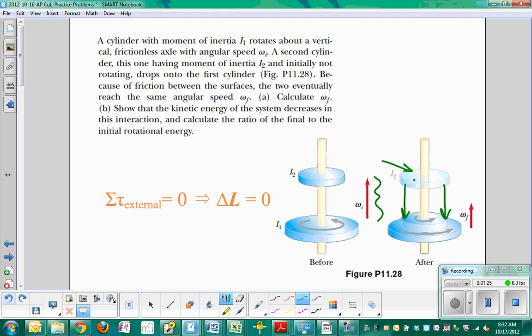Through friction, this one speeds up, that is, disk two speeds up, while this one slows down, right, until they're eventually moving at the same speed, which will be an angular velocity that is less, right here, than the initial angular velocity of disk one when it was rotating by itself.